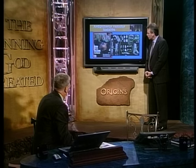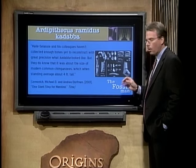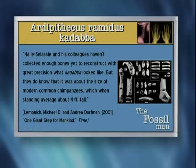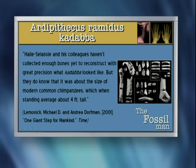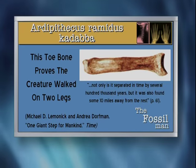Forgive my simplicity, but it's got a bunch of little pieces, and from that you could build anything you wanted if you had a picture in your mind of what you wanted it to be. That's precisely correct. How many of those young people who saw that cover actually read the article where the authors made this admission: 'Hale Celeste and his colleagues haven't collected enough bones yet to reconstruct with great precision what cadaba looked like. But they do know it was about the size of a modern common chimpanzee, which when standing averages about four feet tall.' Do you know anything from there that makes you know it stood on its hind legs? Well, they actually have a toe bone. And in the article, a caption says: 'This toe bone proves the creature walked on two legs.'